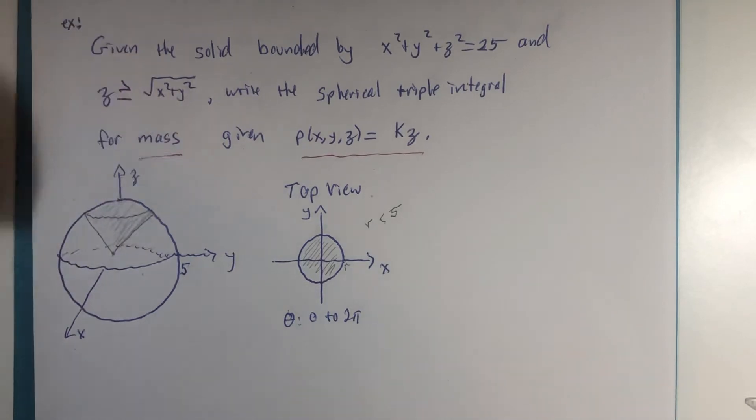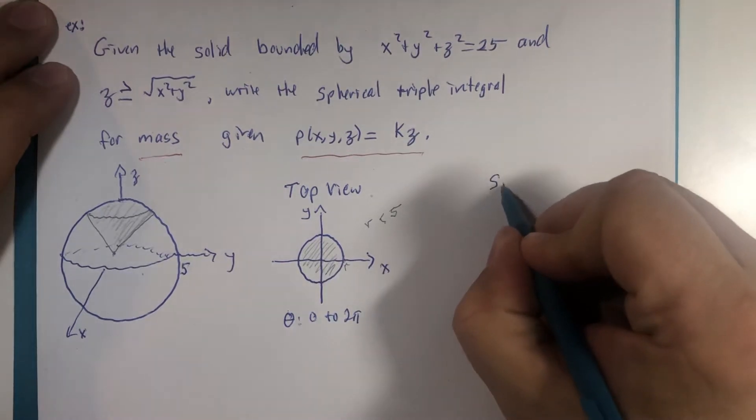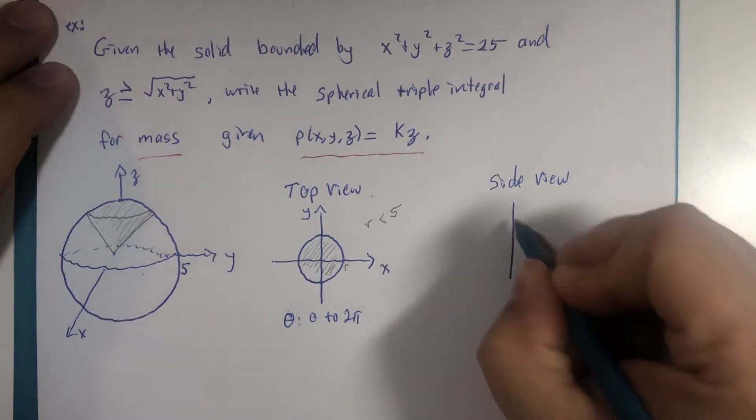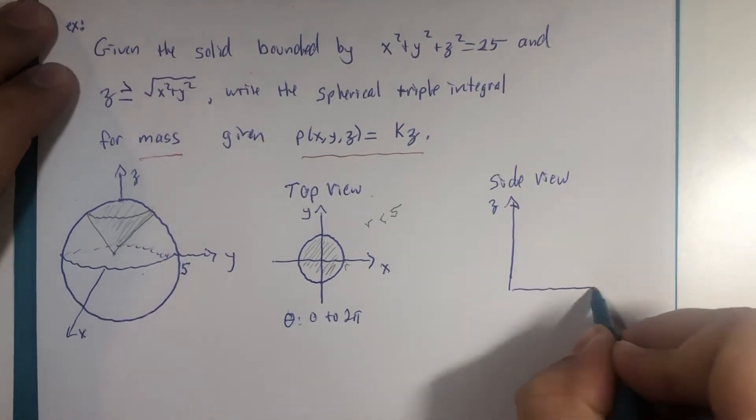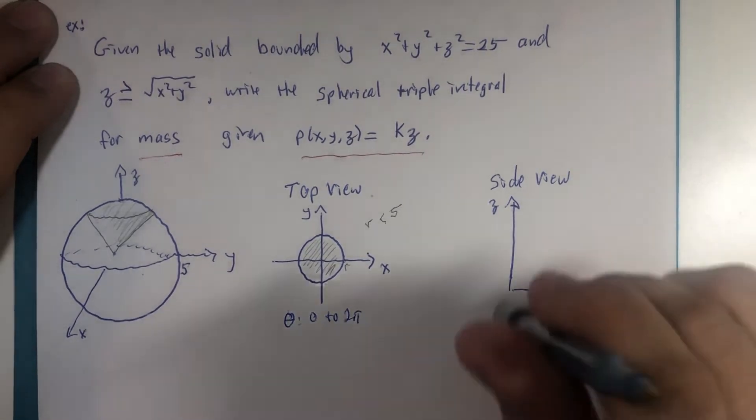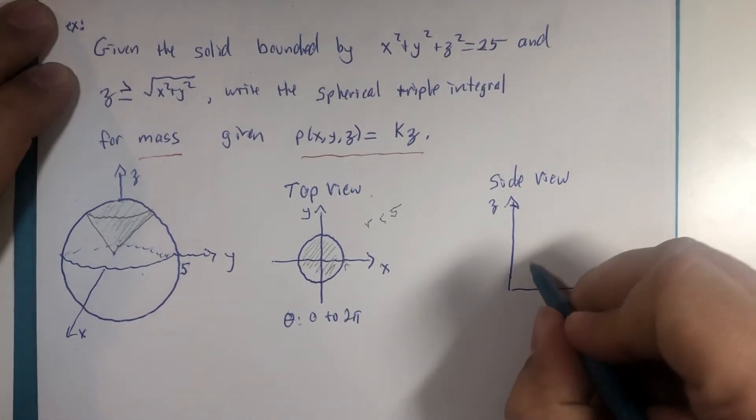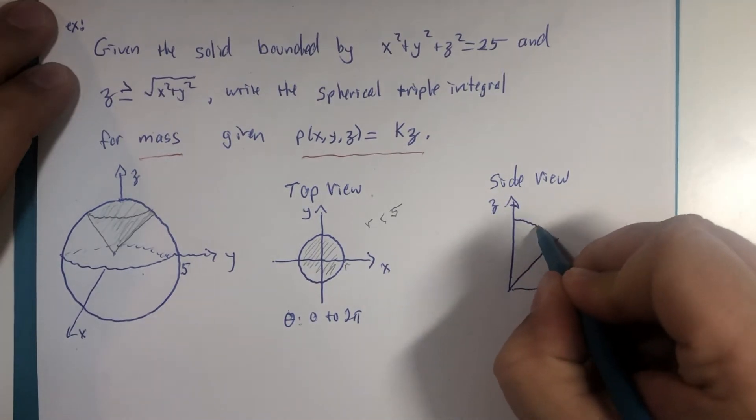So that takes care of the rotating around the z-axis part of this three-dimensional picture. I've also been using the side view, z-axis and y-axis. The x-axis would be pointing straight at the camera, so to speak.